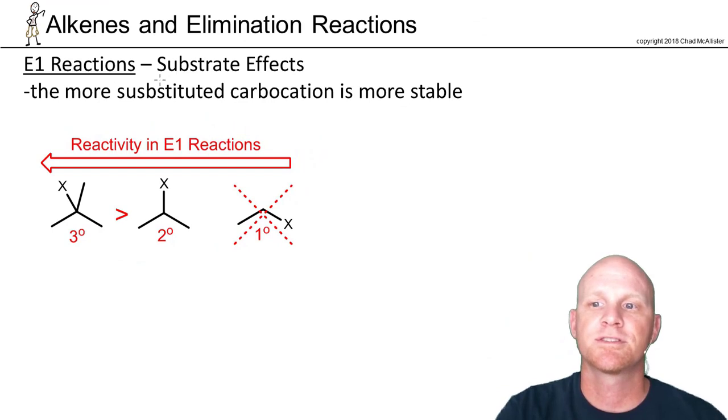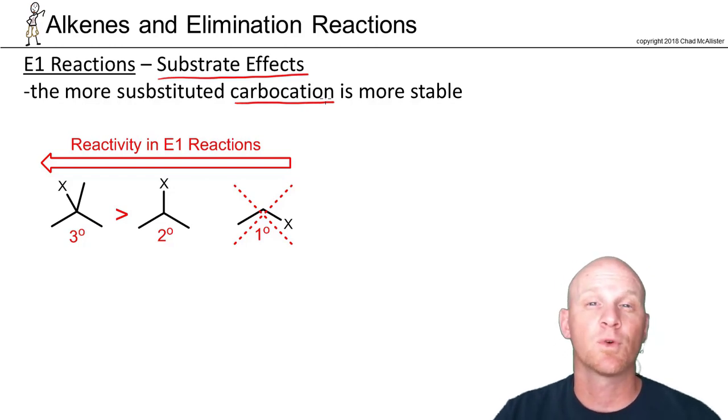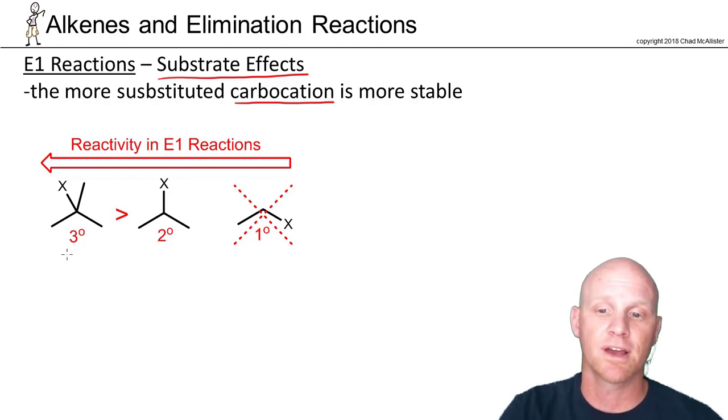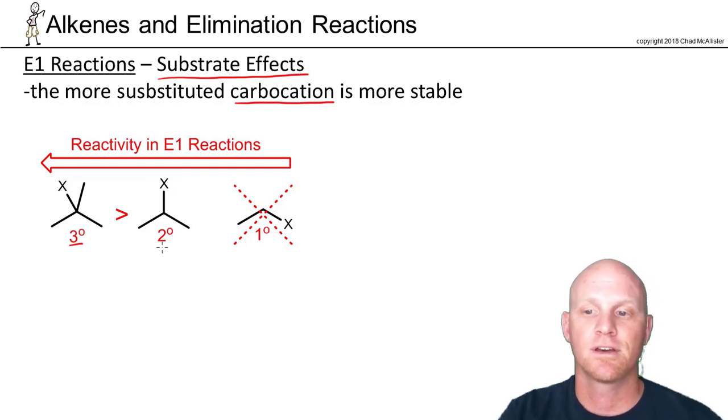Now let's take a look at the substrate effects involved in an E1 reaction. Just like in SN1, this is all about the carbocation. The more substituted carbocation is the more stable carbocation. So the more substituted halide you start with, the more stable the carbocation you'll form, and the lower the activation energy forming it.